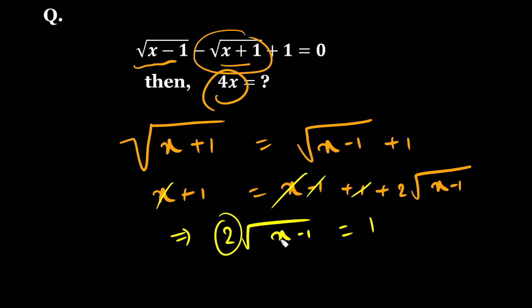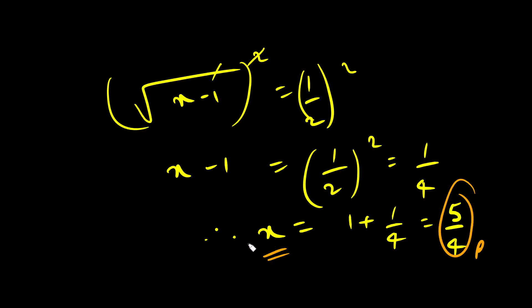We want the value of 4x, so I will have to multiply by 4. So 5 by 4 into 4, from here you get 5 as your answer. So this way you can solve such questions.